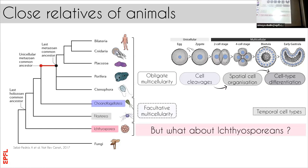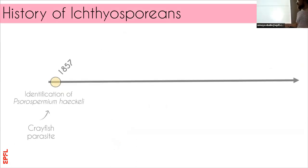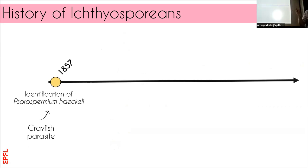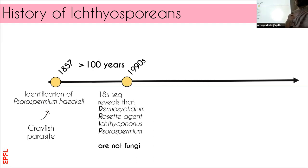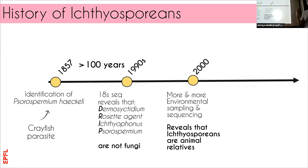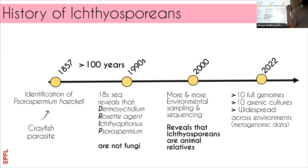So what about ichthyosporeans? Ichthyosporeans have been the underdogs of animal relatives forever. The first ichthyosporean was actually identified by Ernst Haeckel himself in 1857 — it was a parasite of crayfish. The name 'ichthyo' comes from the Greek for fish, and 'spores' because everyone thought they were actually just fungal spores — they look way too much like fungi if you don't have the right tools. It took about 100 years, until 18S sequencing, to realize that a couple of these species were actually not fungi, but actually seem to be in the middle between animals and fungi. And now more environmental sequencing data reveal that ichthyosporeans are close animal relatives. We now have about 20 ichthyosporean species that we can grow easily in the lab.